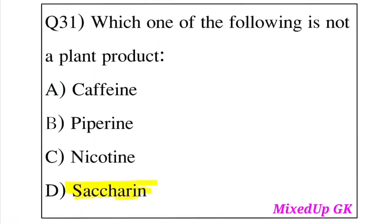Question 31: Which one of the following is not a plant product? Option A: Caffeine. Option B: Piperine. Option C: Nicotine. Option D: Saccharine. The answer is Option D, Saccharine. Saccharine is not a plant product.